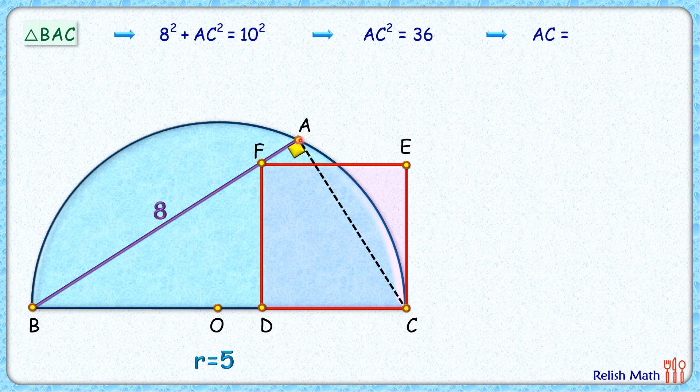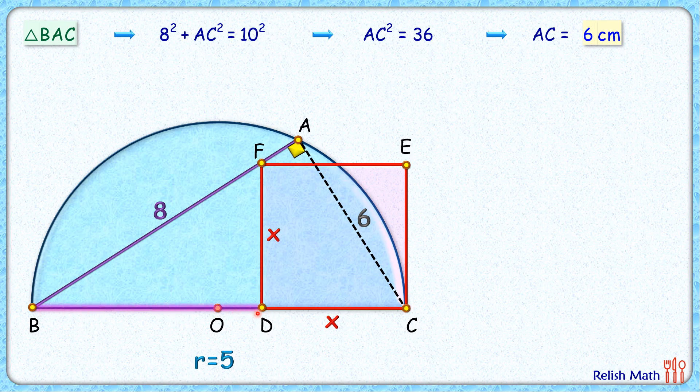Now that we have got this length 6 cm, let's see if we can work out the side length of this square. For that, let's assume the side length of the square is x cm. Now, DC length is x. So what about BD length? BD length will be diameter, that's 10 cm, minus x.